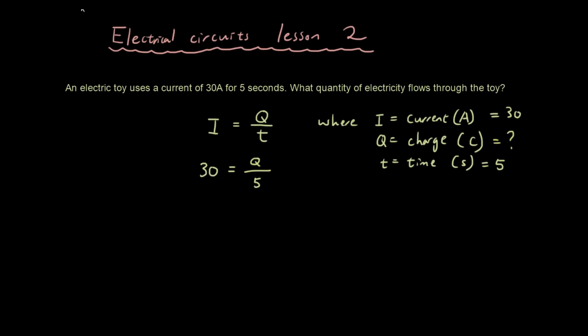So the way we would find that is, if you guys know a bit of basic mathematics, you would know that to solve for Q we would multiply by 5 on both sides. So it will be 150 is equal to Q divided by 5 times 5, which is just Q. So Q is equal to 150 coulombs and that is the answer.